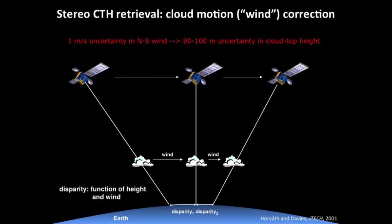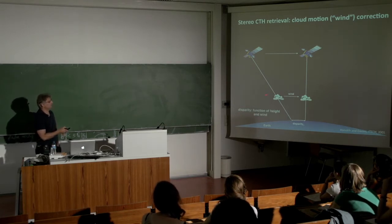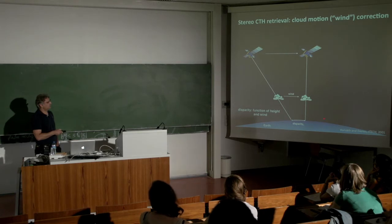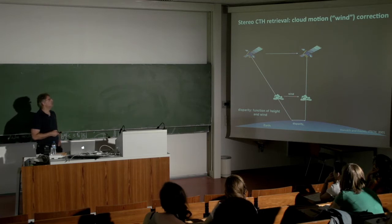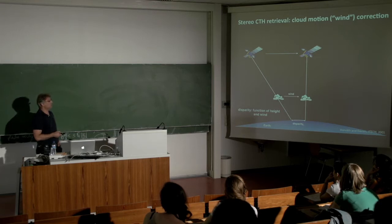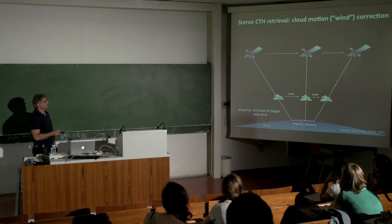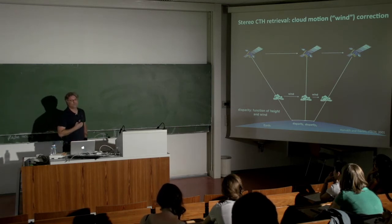The problem is that there is wind between the images, so the cloud moves with a cloud-motion wind. If you look at two different images and measure the distance between the cloud's locations, the cloud might also have moved. So you have two unknowns — the wind speed and the cloud top height — in one measurement. The obvious solution is to use a third image, giving two disparity measurements for two unknowns, so you can pull out both wind and height simultaneously.